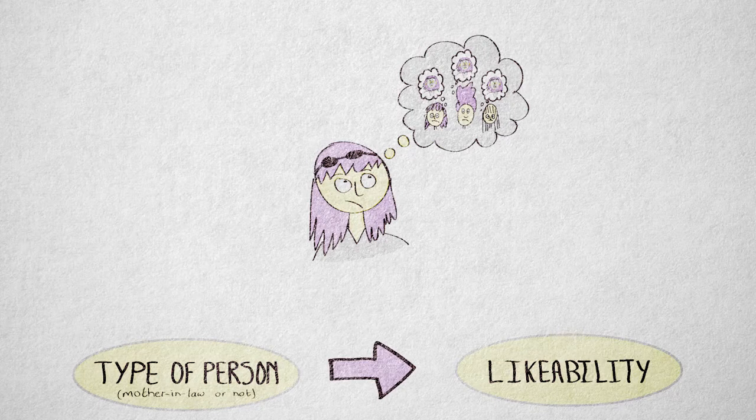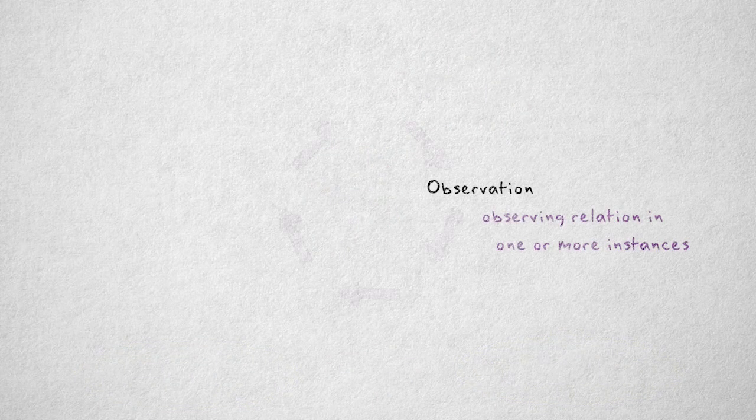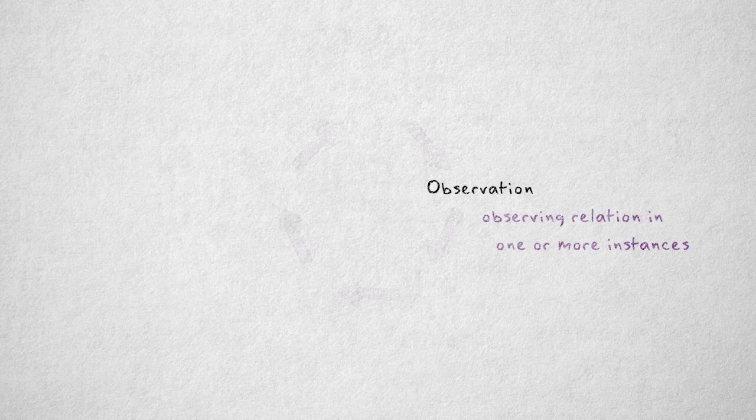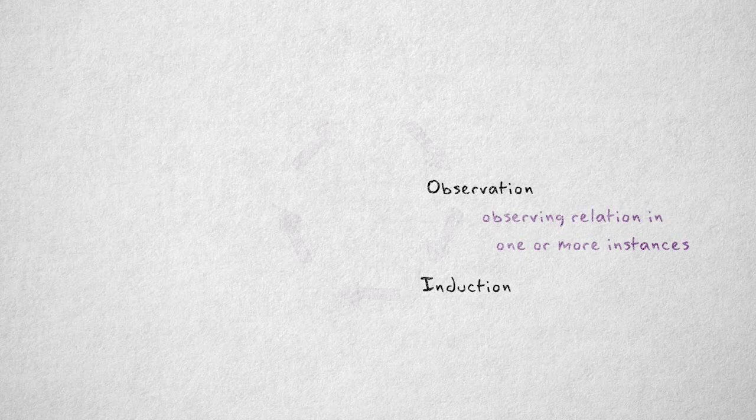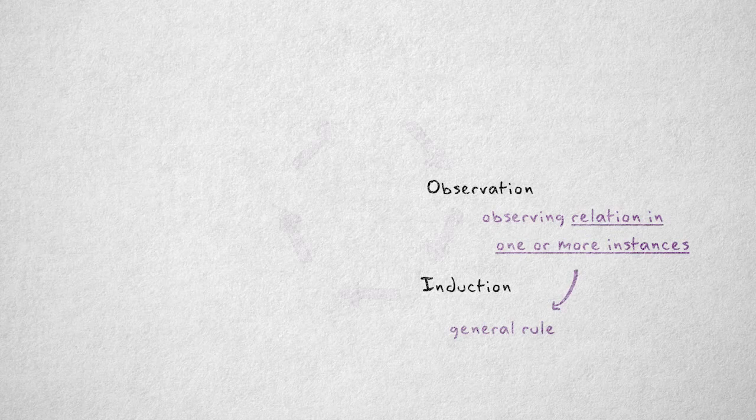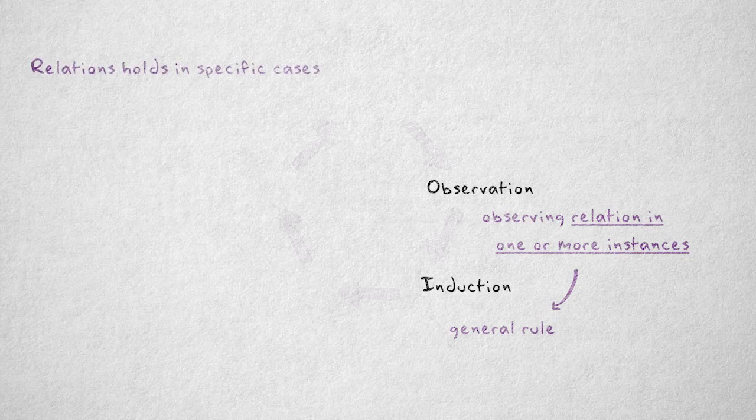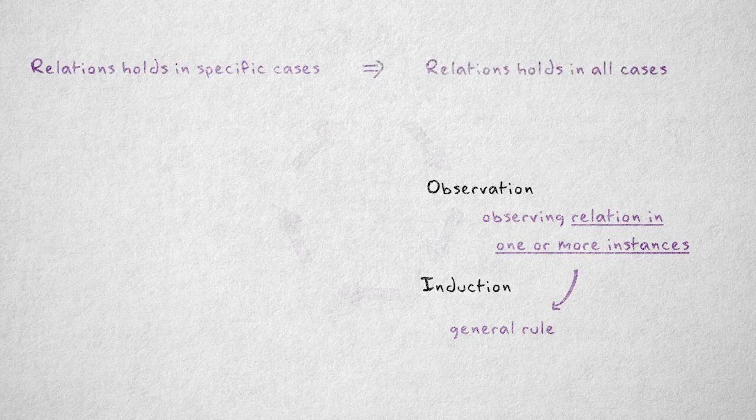The observation phase is about observing a relation in one or more specific instances. In the induction phase, this relation observed in specific instances is turned into a general rule. That's what induction means: taking a statement that's true in specific cases and inferring that the statement is true in all cases, always.